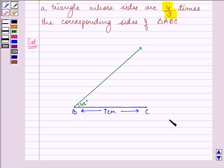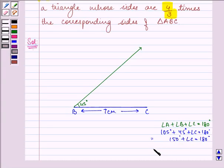And now we have angle A as 105 degrees. So firstly, we need to calculate what will be angle C. So we know that angle A plus angle B plus angle C is equal to 180 degrees. Angle A is 105 degrees, angle B is 45 degrees. So angle C will be equal to 30 degrees. So we need to draw an angle of 30 degrees at C.